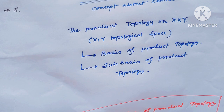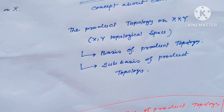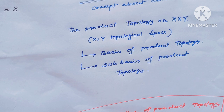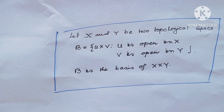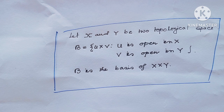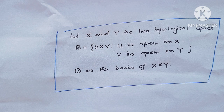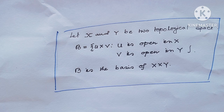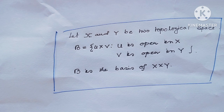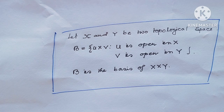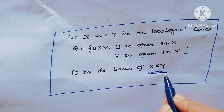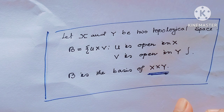Now I will see what is the basis of product topology and what is the sub-basis of product topology. The product topology is defined on X cross Y where X and Y are topological spaces. The basis of product topology looks like U cross V, where U is an open set in X and V is an open set in Y. This is the basis for X cross Y. The first condition of a basis is trivial: every point of X cross Y is contained in a basis element containing that point.